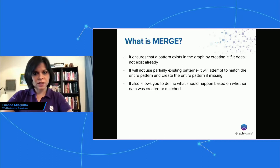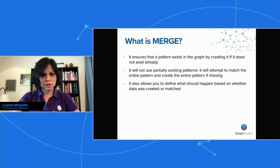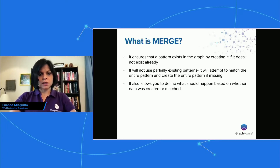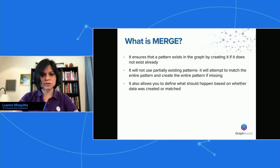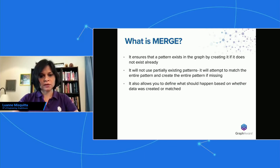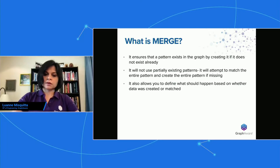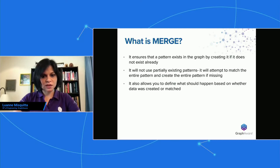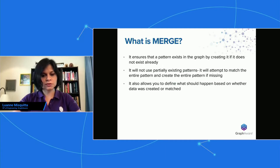So what is Merge? A quick recap. Merge really ensures that a pattern exists in the graph by creating it if it does not exist already. One of the key factors for Merge is that it doesn't use any partial patterns — it's an all-or-none kind of thing. Merge also allows you to define what should happen based on whether data was created or matched — the onCreate and onMatch clause. We're going to skip over onMatch today because it's really straightforward, and there are no hidden tricks there.